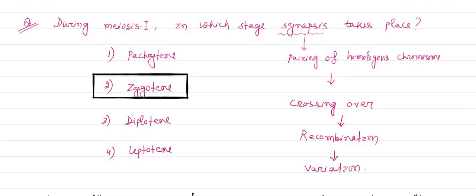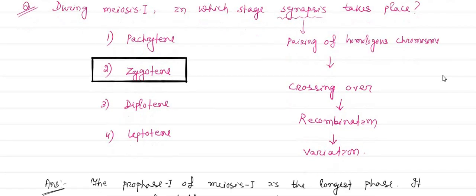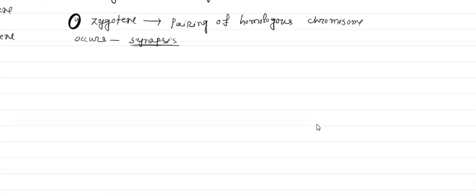And this recombination leads to variation. This variation makes meiosis differ from mitosis. These are all about the explanation along with the answer.